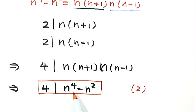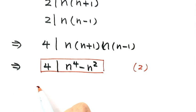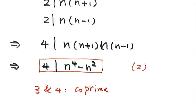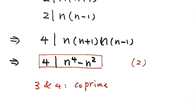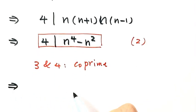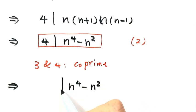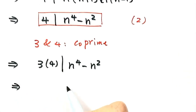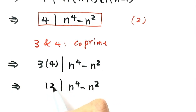Since n to the fourth minus n squared is divisible by both 3 and 4, and 3 and 4 are coprime — they have no common factor other than 1 — it follows that n to the fourth minus n squared is divisible by 3 times 4, which equals 12. This completes the proof. Thanks for watching.